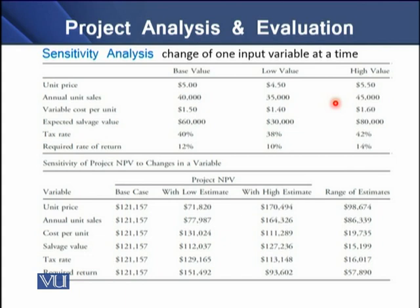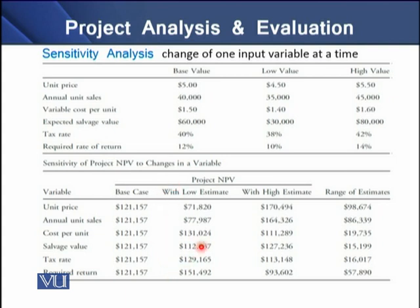From these 12 changes, we can expect 12 different NPVs. For the base case, we have the same project NPV. For low estimates, we have six different NPV values — one for each variable changed. Similarly, for the high estimates, we have six corresponding NPV values.